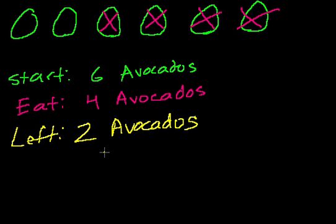So we just did subtraction. If I were to write this without having to draw avocados, we would have said six minus, you could view the eat as minus, taking away. So six minus four avocados is equal to two avocados.